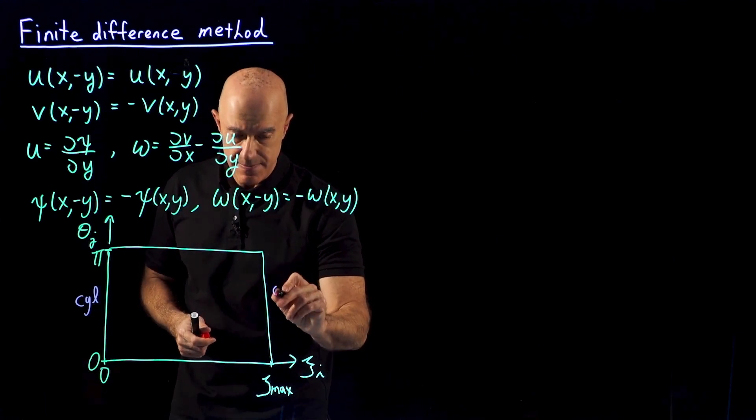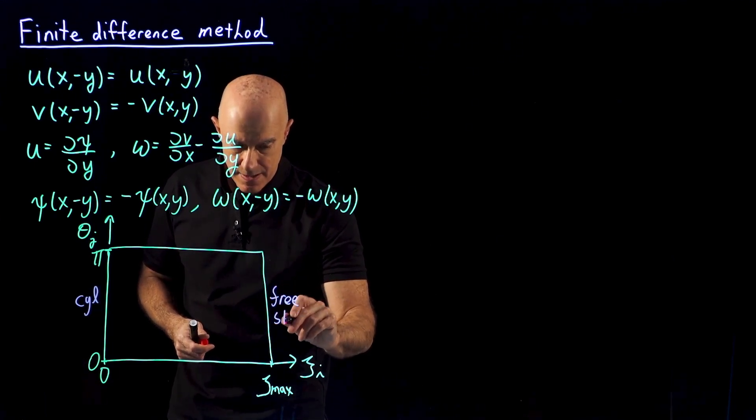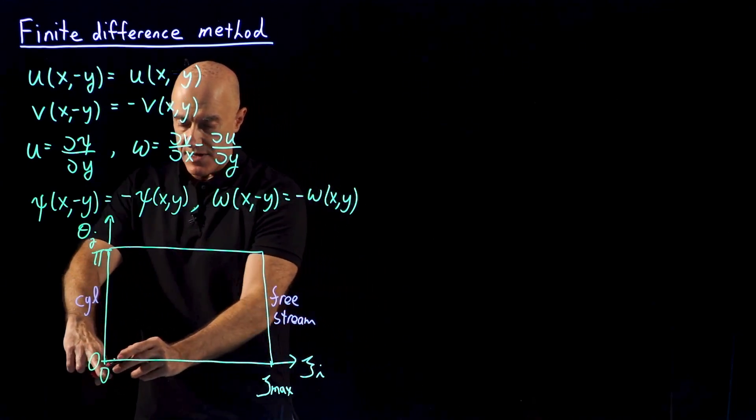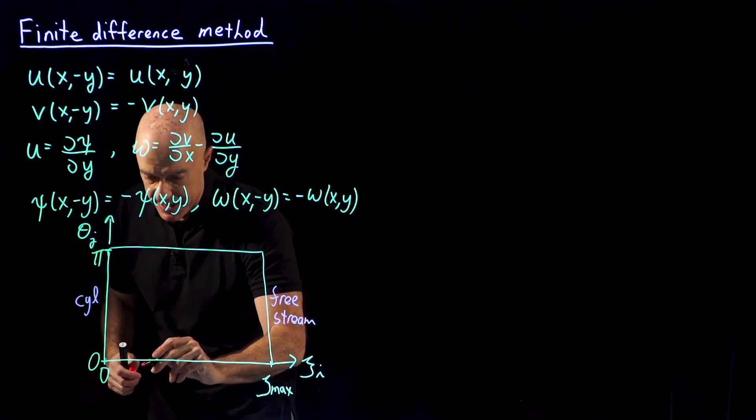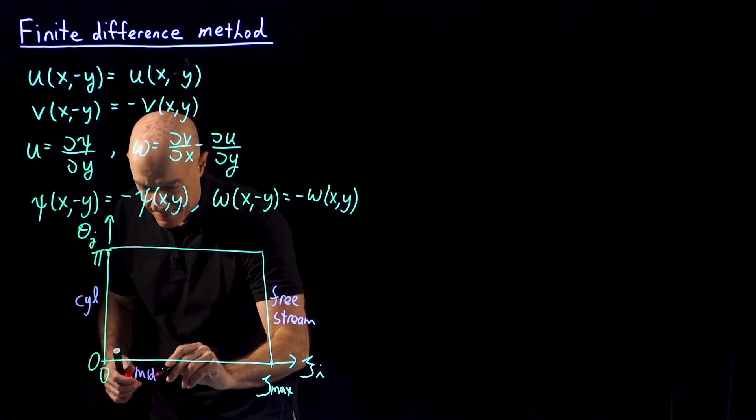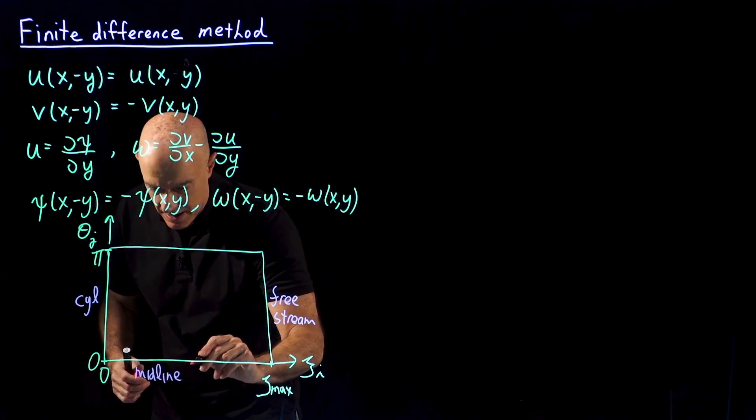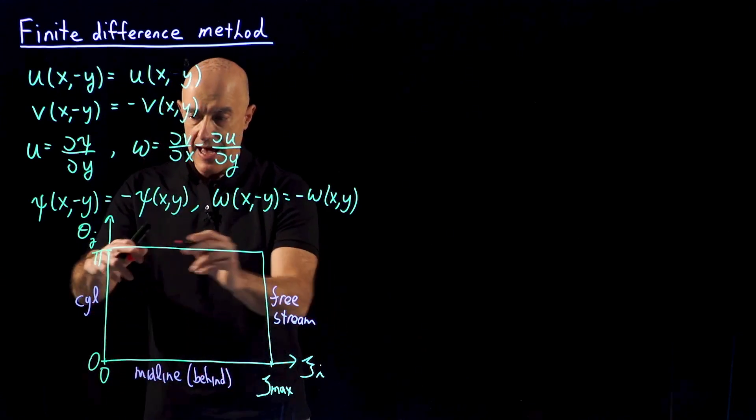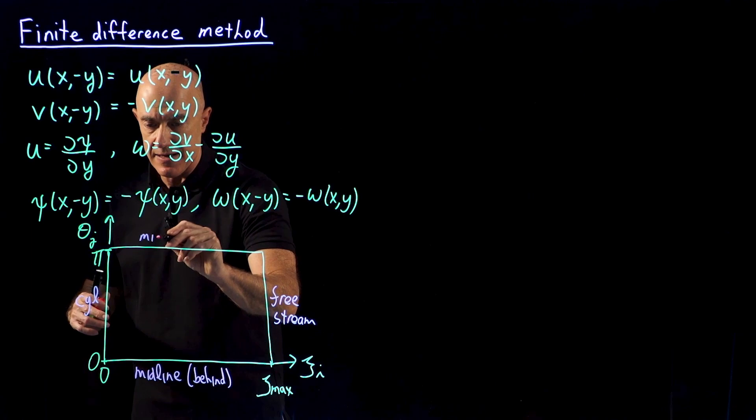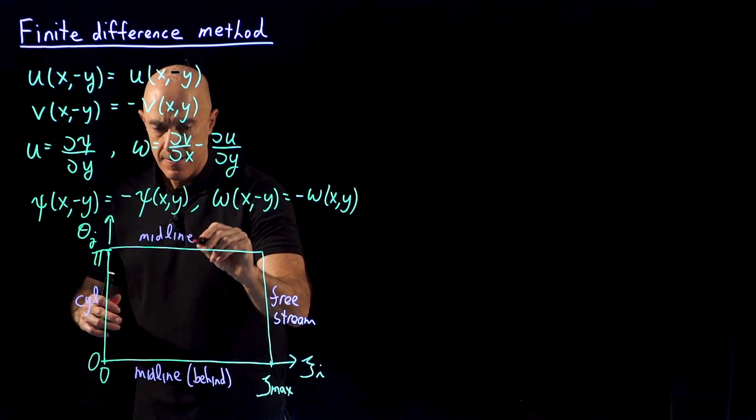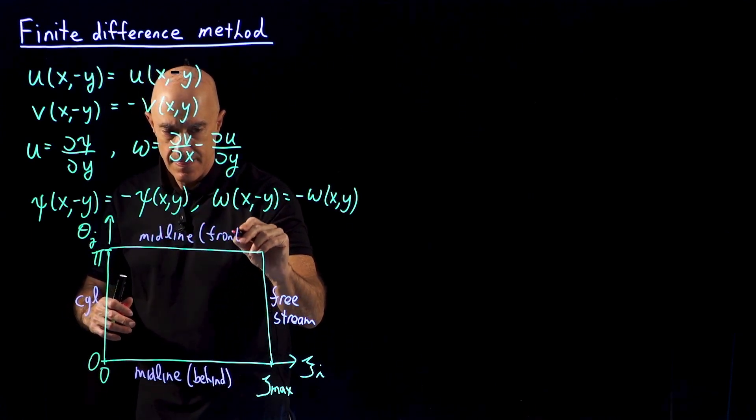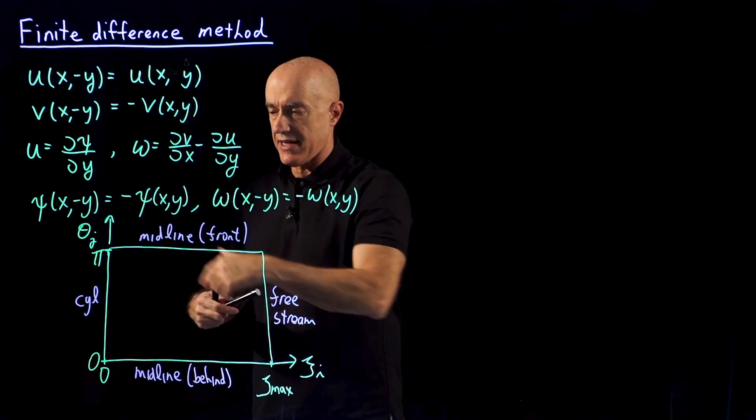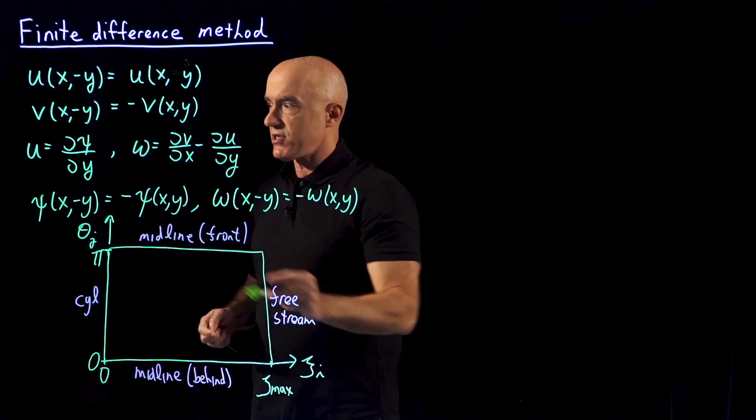This is the free stream, where we're the maximum distance away from the cylinder. This one at θ=0 is behind, it's on the midline, but it's behind the cylinder. And θ=π is also on the midline, but it's in front of the cylinder. That's our domain of solution. So we want to discretize now the equations on this domain.